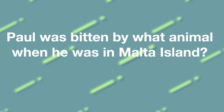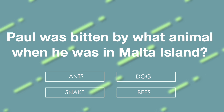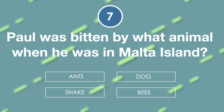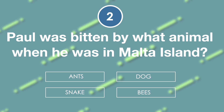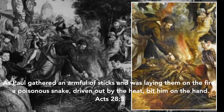Paul was bitten by what animal when he was on Malta Island? Is it ants, dog, snake, or bees? The answer is snake. 'As Paul gathered an armful of sticks and was laying them on the fire, a poisonous snake, driven out by the heat, bit him on the hand.' Acts chapter 28 verse 3.